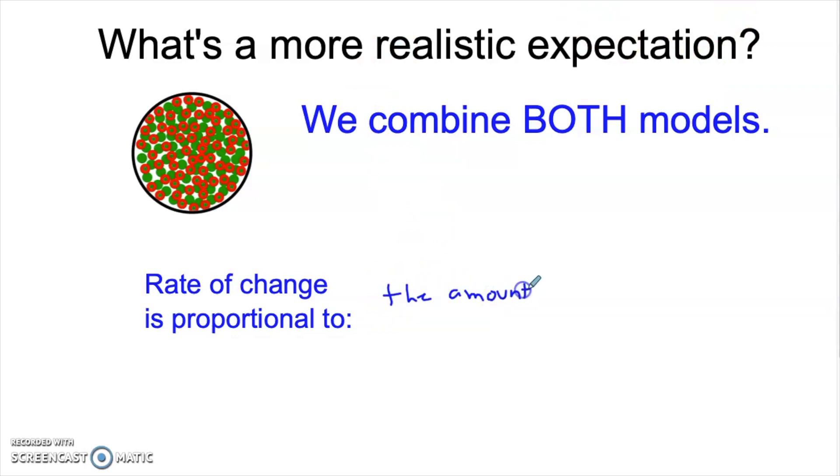So a more realistic expectation is we combine both models. When we combine both models, we're now talking about an equation where the rate of change is proportional to the amount that's present, the number of bacteria, but also proportional to the difference between that amount and the maximum value. In other words, as we approach the maximum value, it's going to slow that growth rate. In the beginning, when we have not very many present, that will slow the growth rate. And these two will kind of trade off. So we'll get this exponential in the beginning, and then it'll switch to a more Newton's law of heating cooling type of style in the end.